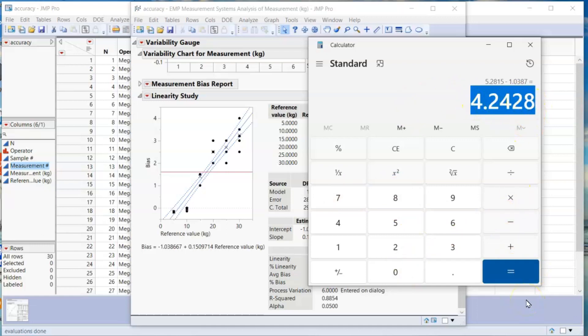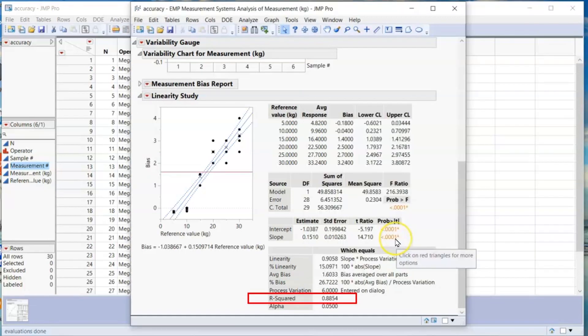Just take note that this is only an estimation. If the R-squared value is high or close to the max value of 1, then the estimation can be quite close. Do not use estimation if the R-squared value is lower than 0.5. That's all for linearity analysis using JMP.